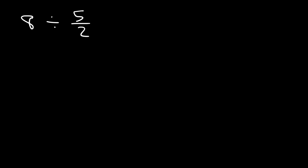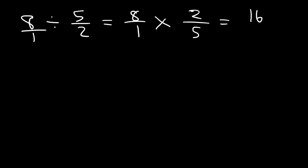Here's another example — slightly different but very similar. This time the whole number is written in front of the fraction. What is 8 divided by 5 over 2? We're going to write 8 as 8 over 1 and use the keep-change-flip principle: keep the first fraction the same, change division to multiplication, and flip the second fraction. We get 8 times 2, which is 16, over 5 times 1, which is 5. So 16 over 5 is an improper fraction, and that is the answer.